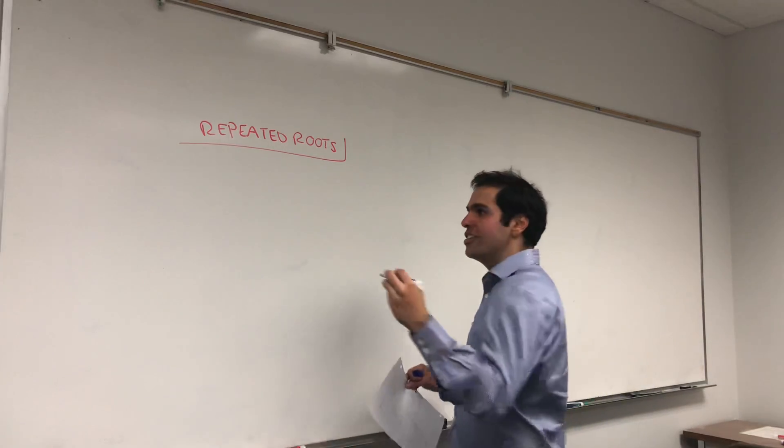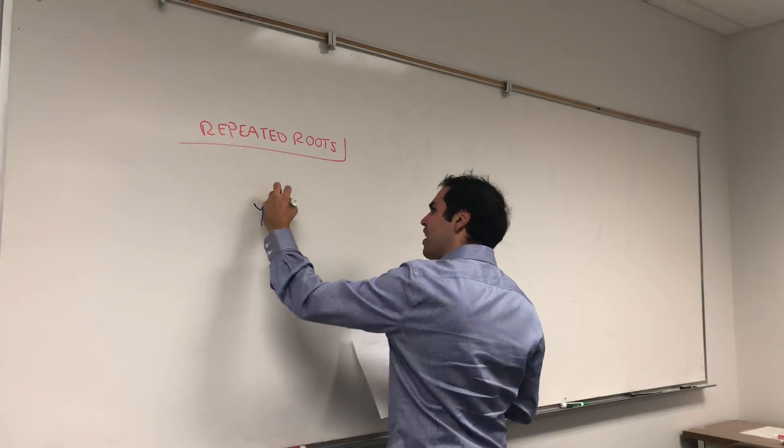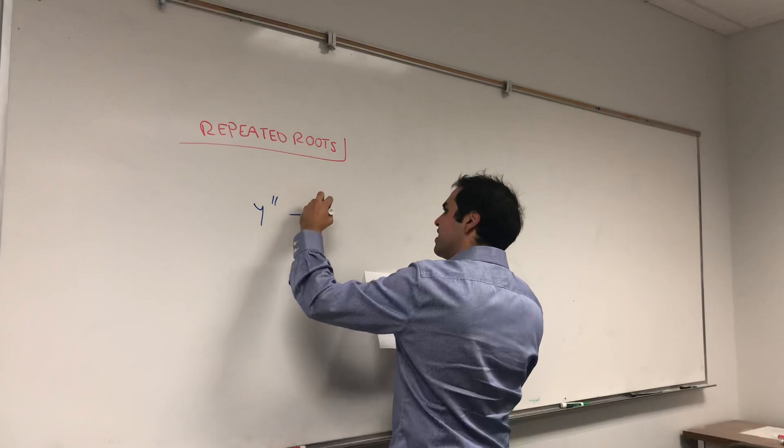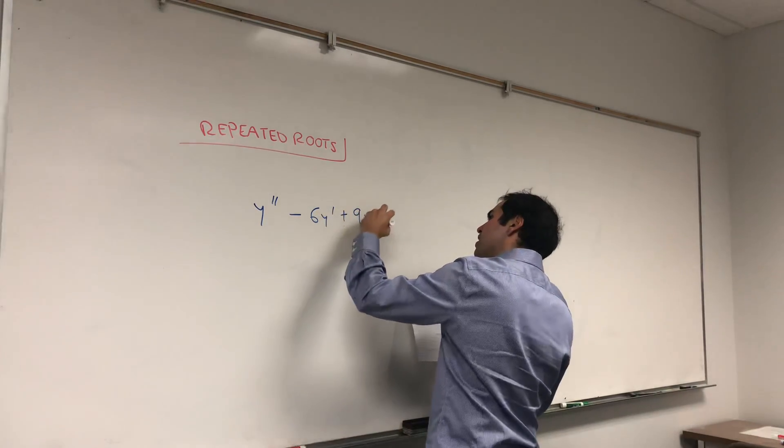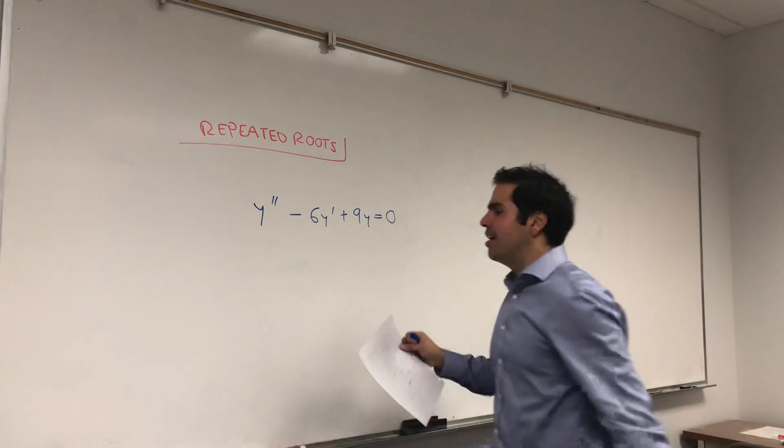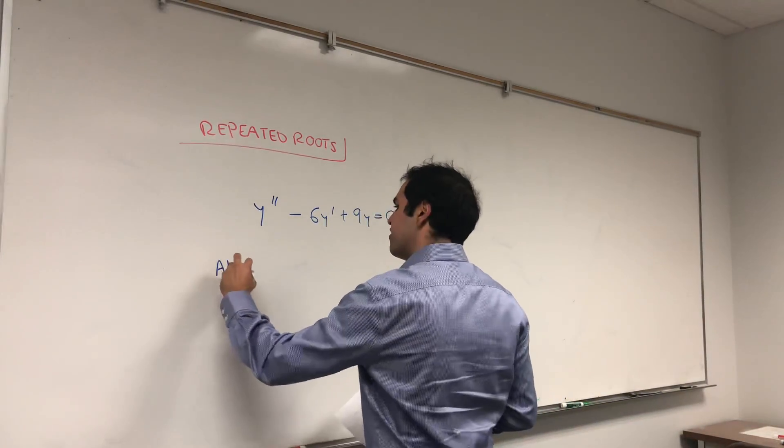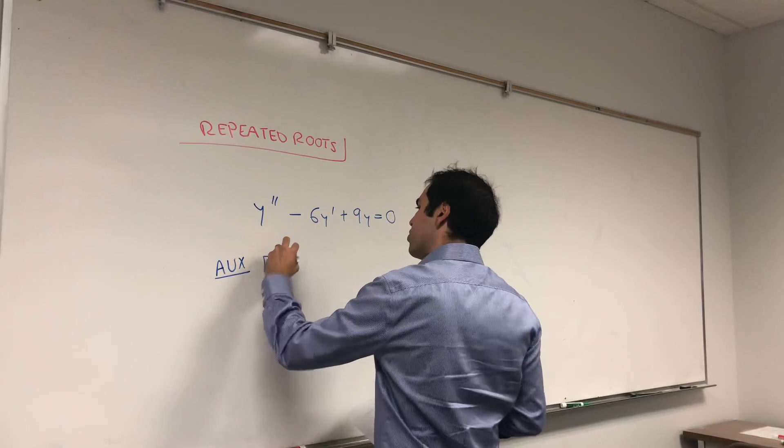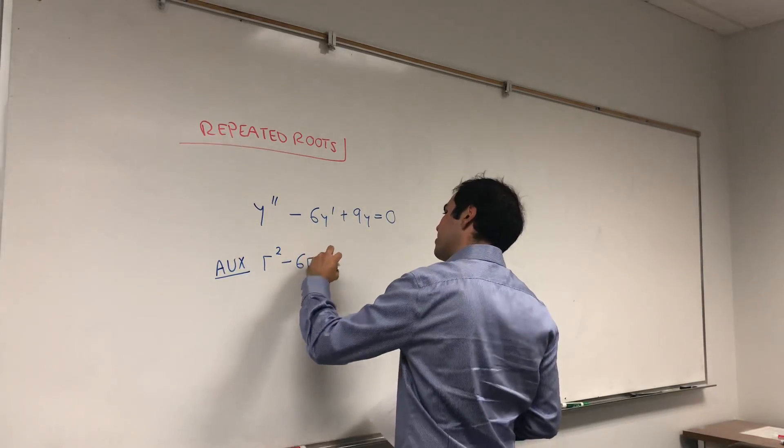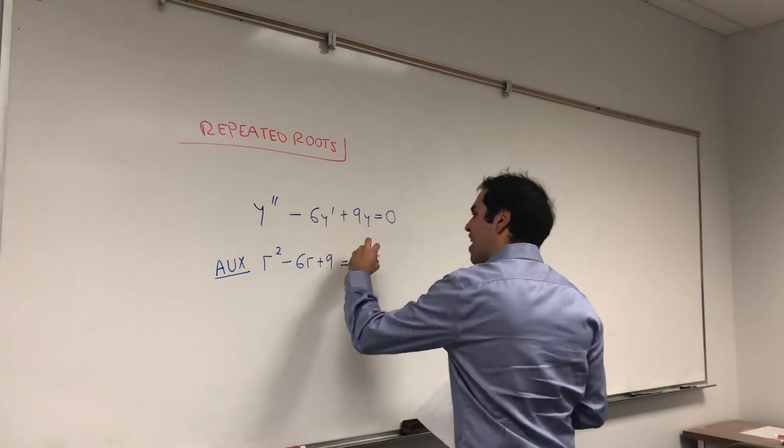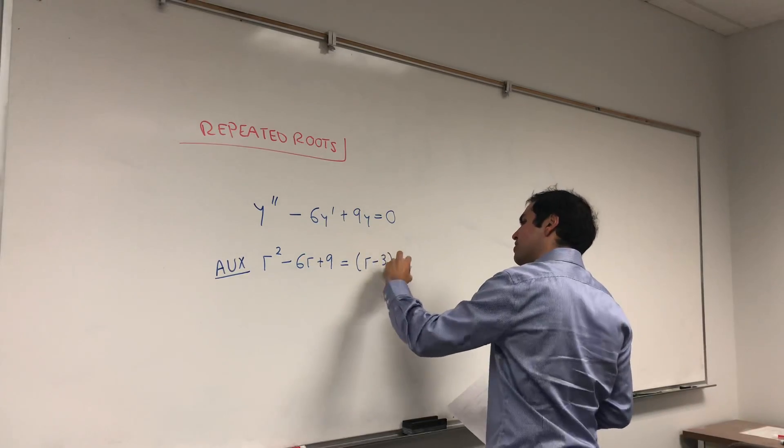Namely, consider a differential equation like y double prime minus 6y prime plus 9y equals zero. Now, the way you learn this is simply you see the auxiliary equation is r squared minus 6r plus 9, which can be factored out as r minus 3 squared.